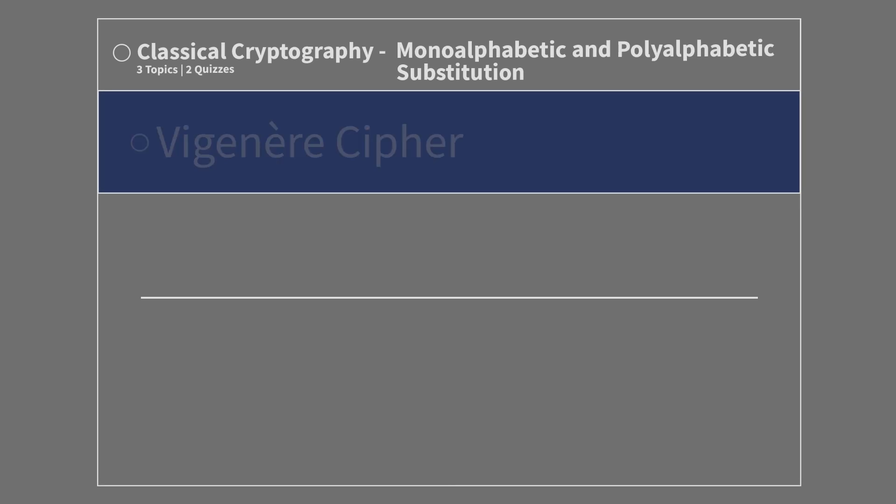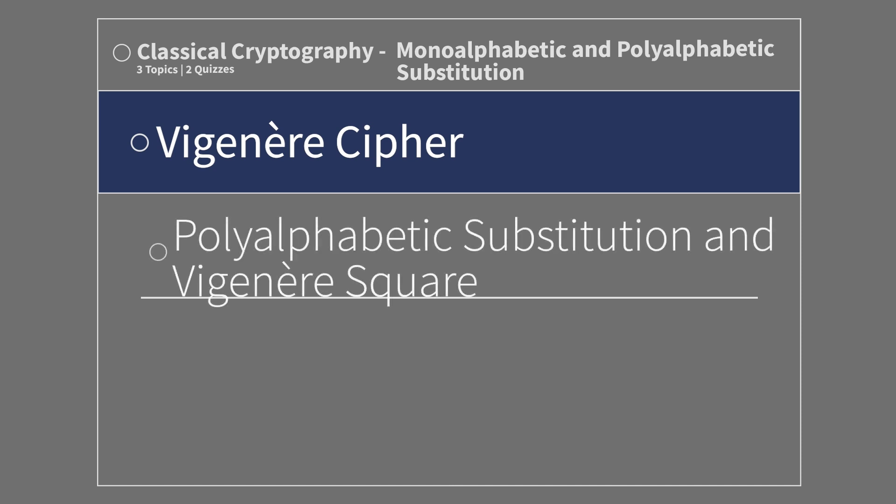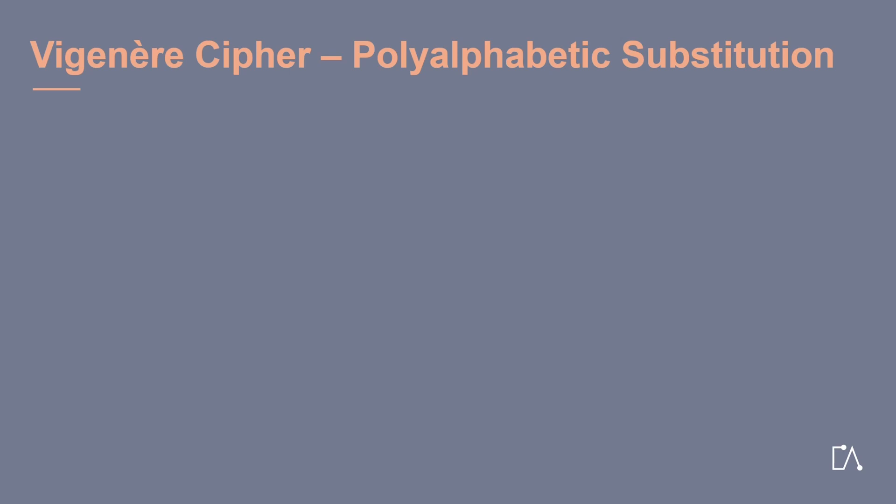Classical cryptography — mono-alphabetic and poly-alphabetic substitution, the Vigenère cipher, poly-alphabetic substitution and the Vigenère square. On this slide, we want to discuss the concept of poly-alphabetic substitution as used for the Vigenère cipher.